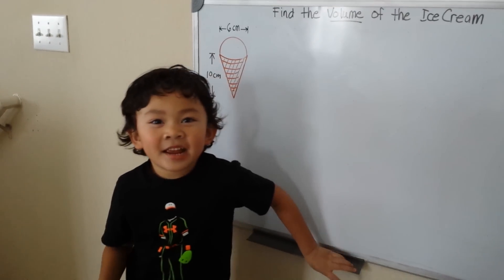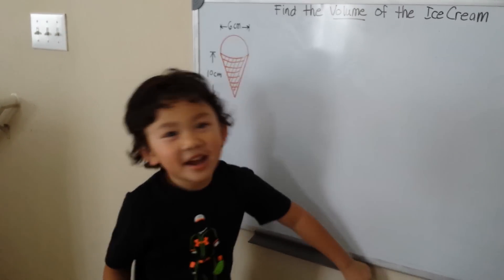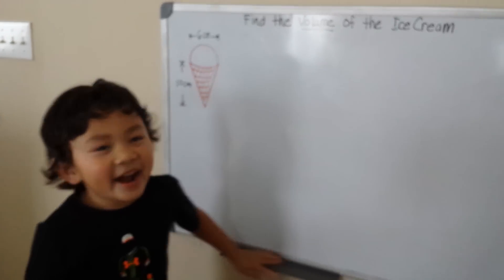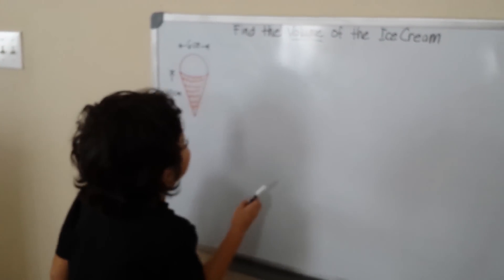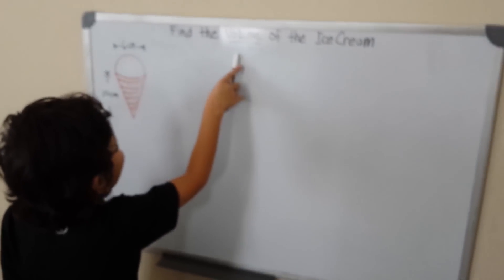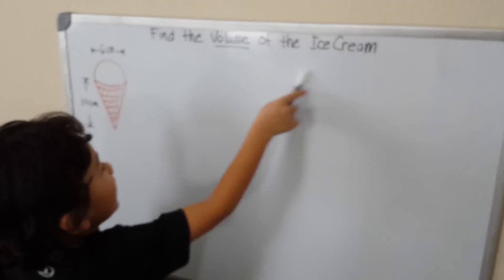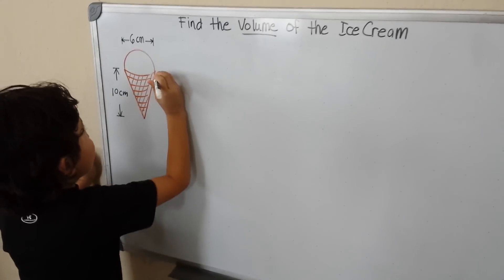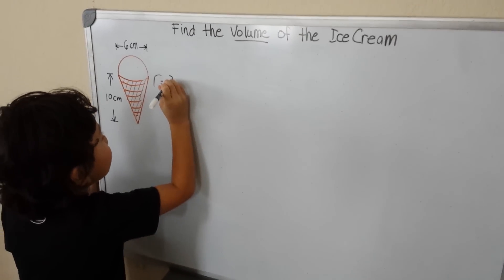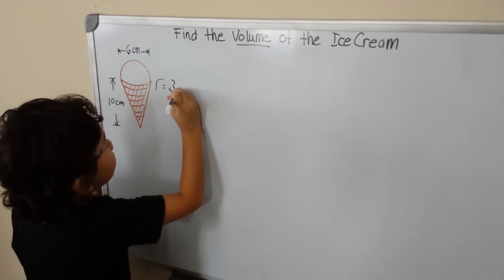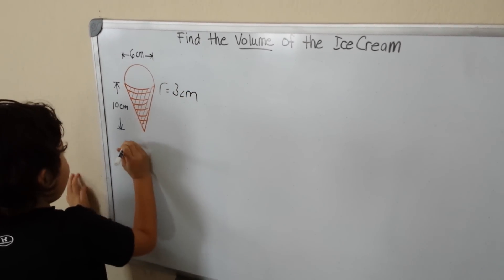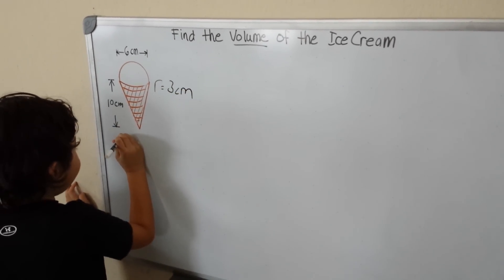Hello, my name is Miguel, and today I am going to find the volume of the ice cream. The radius is equal to 3 centimeters. Now let's go ahead and find our volume.